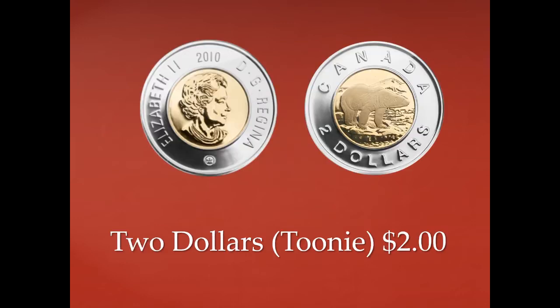This is our two dollar coin. Do you remember what we call it? We call it a toonie. It is worth two dollars. On the head side we have a picture of Queen Elizabeth the Second, and on the tail side we have a polar bear. Above the polar bear it says 'Canada' and below the polar bear it says 'two dollars.' A toonie is worth two dollars.